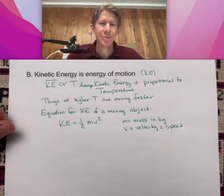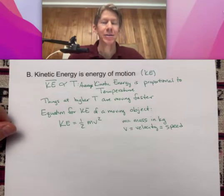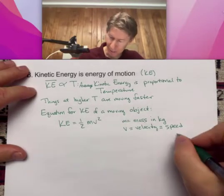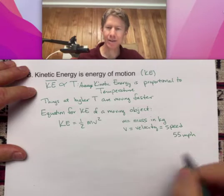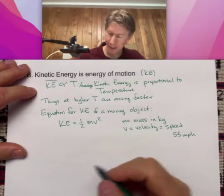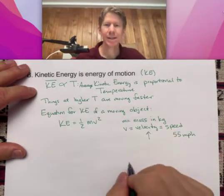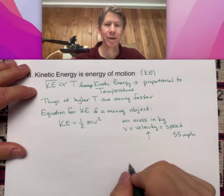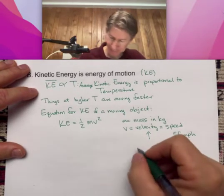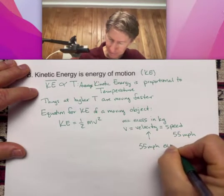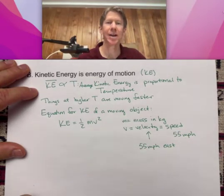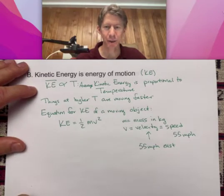And the difference between speed and velocity is that if you're driving and your speed is 55 miles per hour, where mph stands for miles per hour, your velocity is going to be 55 miles per hour east.